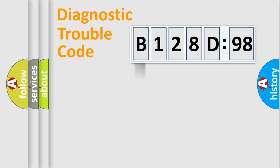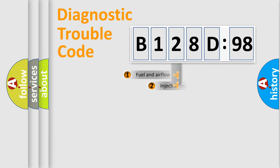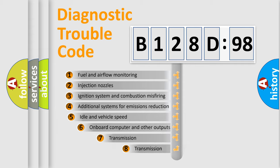Powertrain, Body, Chassis, Network. This distribution is defined in the first character code. If the second character is expressed as zero, it is a standardized error. In the case of numbers 1, 2, 3, it is a manufacturer-specific expression of the car-specific error.